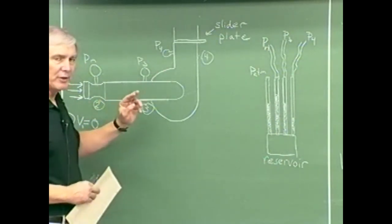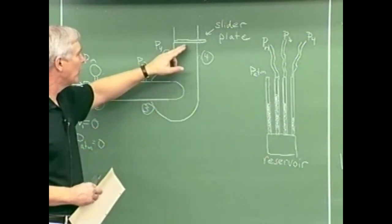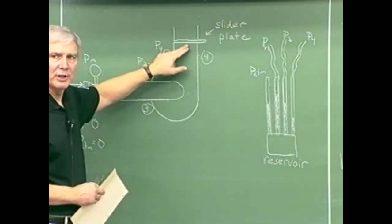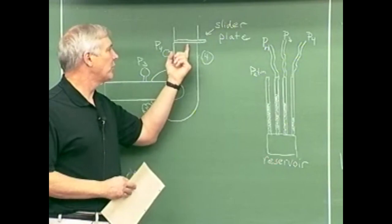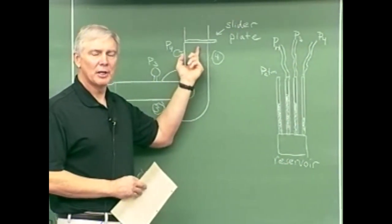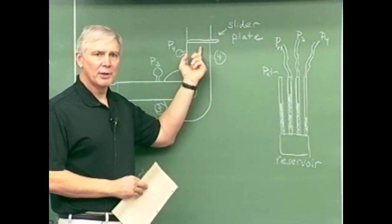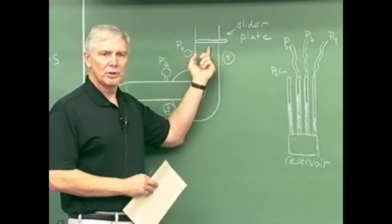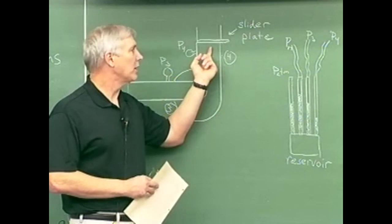We control the fan flow rate with a slider plate that's located up here. And you'll see in the lab that it's incremented in 0, 20, 40, 60, 80, and 100% of the flow. Now when you do your analysis, you're not going to use those percents. You're going to use the actual flow rates.